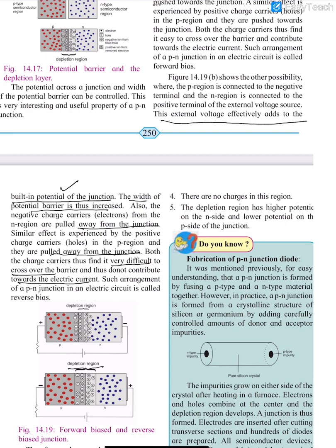In reverse bias, the charges find it difficult to cross the barrier. So to summarize: reverse biasing and forward biasing of the PN junction — these are the two types of biasing we need to understand.